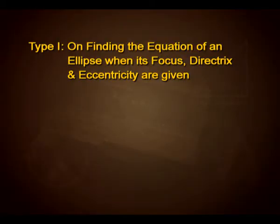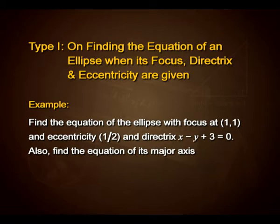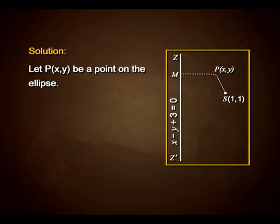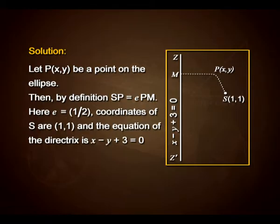Now let us discuss Type 1 problems, which are based on finding the equation of an ellipse when its focus, directrix and eccentricity are given. Example: find the equation of the ellipse with focus at (1, 1), eccentricity 1/2, and directrix x − y + 3 = 0. Also find the equation of its major axis. Let P(x, y) be a point on the ellipse. Then by definition SP = e × PM. Here e = 1/2, coordinates of S are (1, 1), and the equation of the directrix is x − y + 3 = 0. Therefore SP = (1/2) × PM.